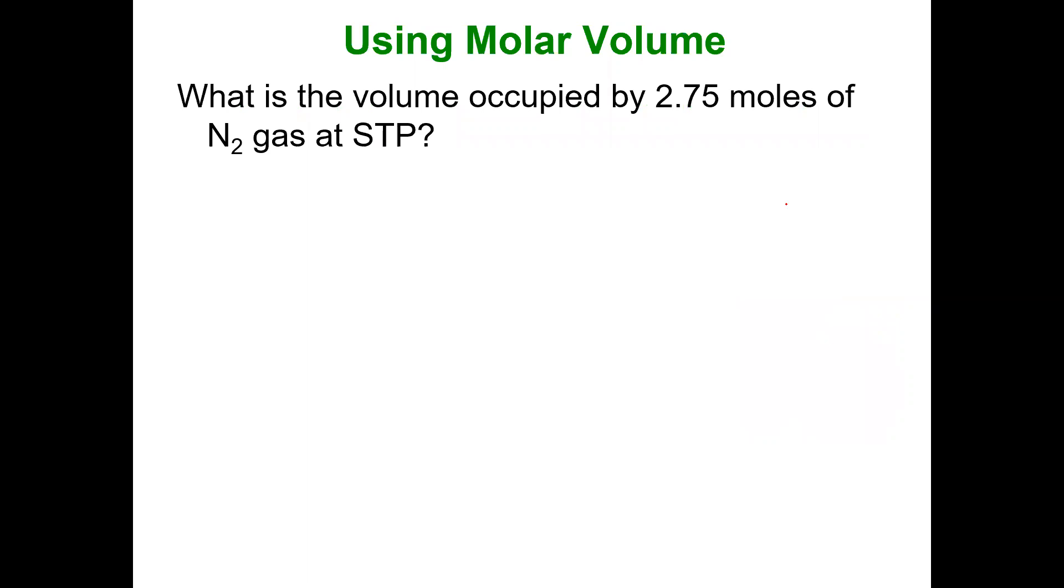How is this useful? So what is the volume occupied by 2.75 moles of nitrogen gas at STP? The key here is whenever you hear STP, you're thinking one mole, 22.4 liters. Doesn't matter if it's nitrogen. As long as you know it's at STP, one mole is 22.4 liters.